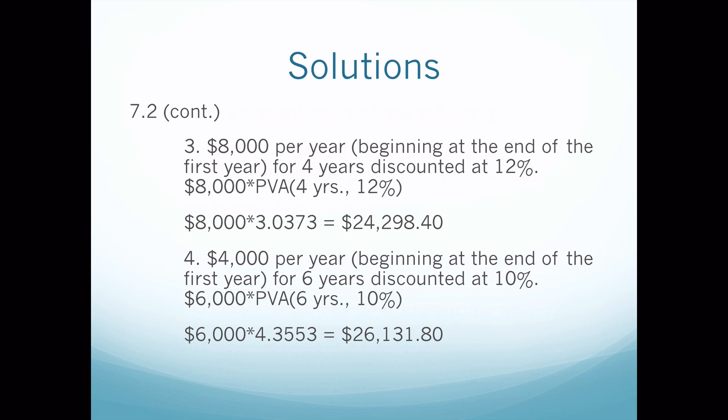Problems three and four are like three and four on problem 7.1 except they're present value with 'per year,' so we know it's an annuity. We want to know what $8,000 per year is worth today. For example, if you got a settlement of $8,000 a year for four years, what lump sum could you take today instead? We calculate $8,000 times PVA(4 years, 12%). The multiplier is 3.0373, so $24,298.40 today is equivalent to receiving $8,000 per year for four years.